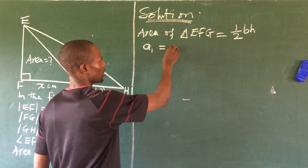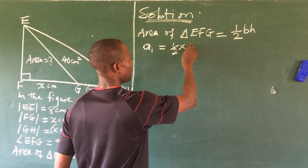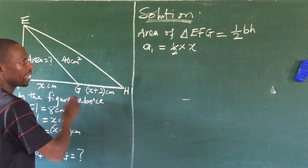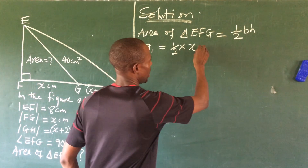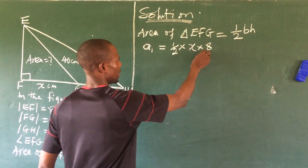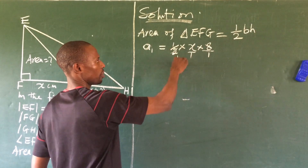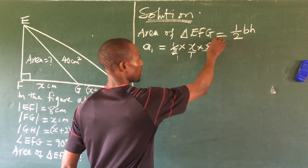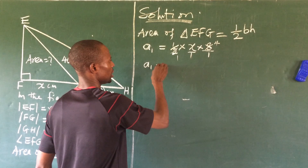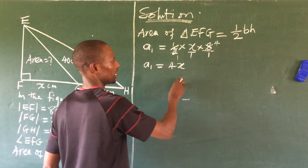So A1 equals one-half times x times 8. The 2 and 8 cancel to give 4, so A1 equals 4x. We don't know the value of x yet, so let's call this equation one.